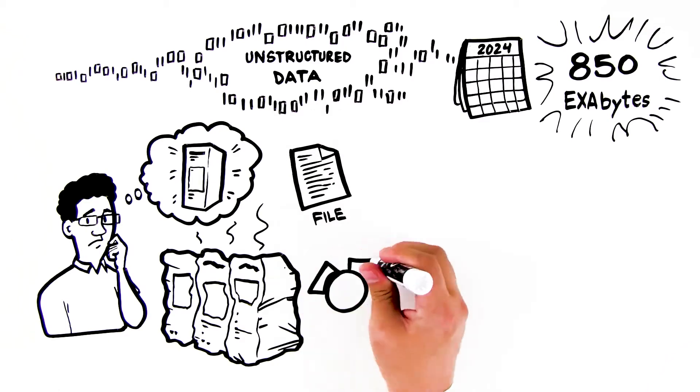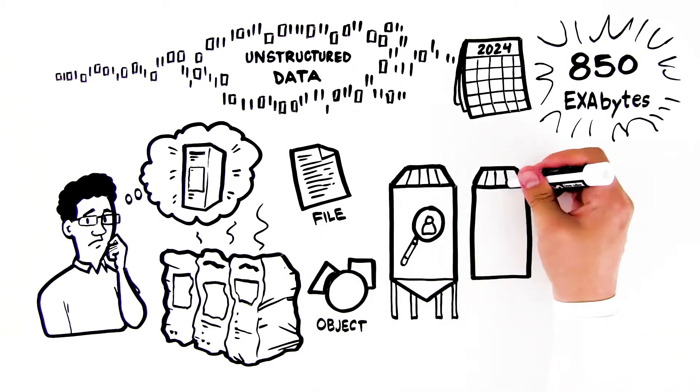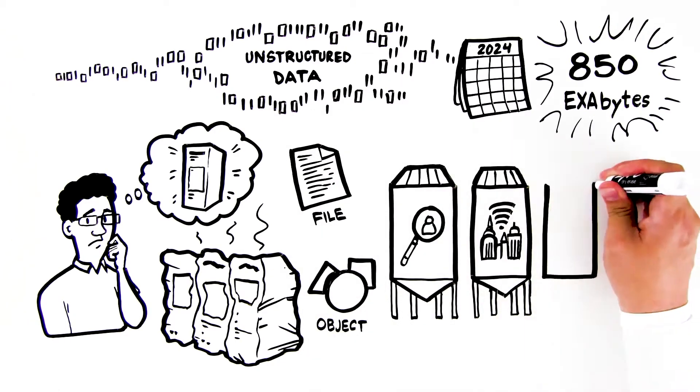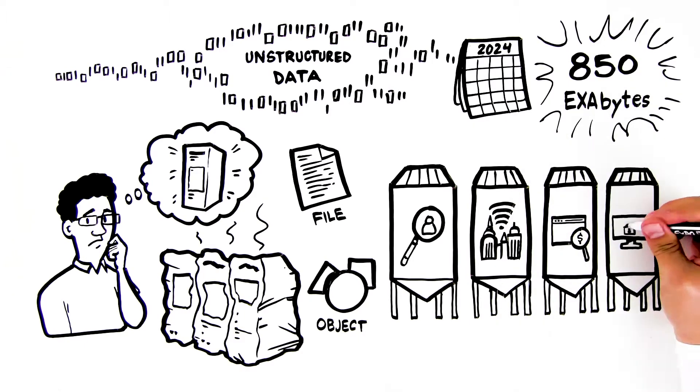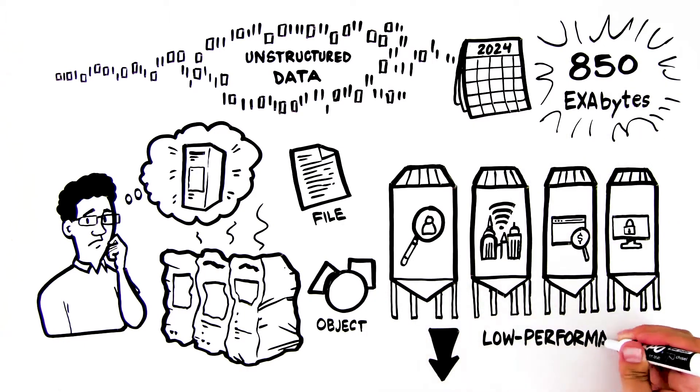Legacy systems typically store file and object data in dedicated silos, each one supporting its own application workload with various compute and storage architectures. Many, especially object systems, are typically designed as low-performance archive environments.